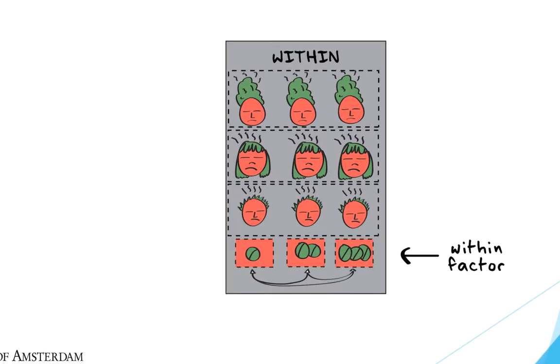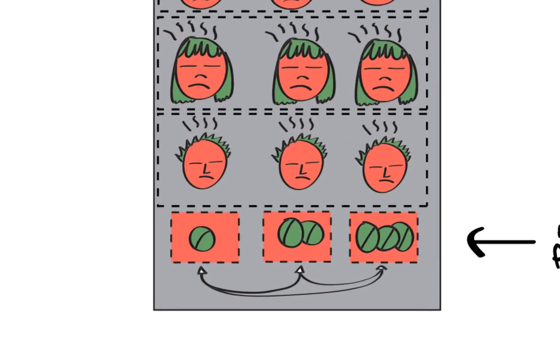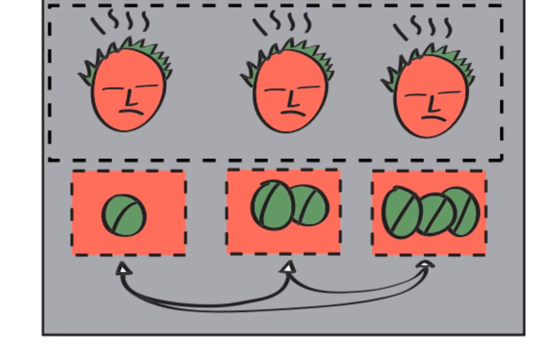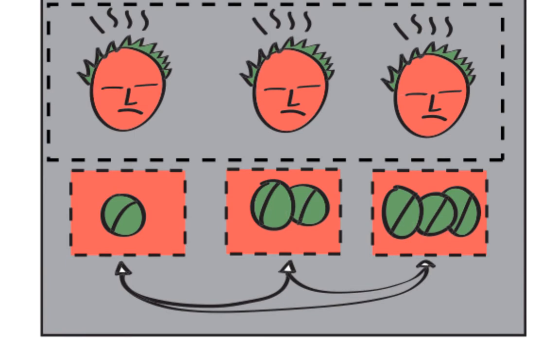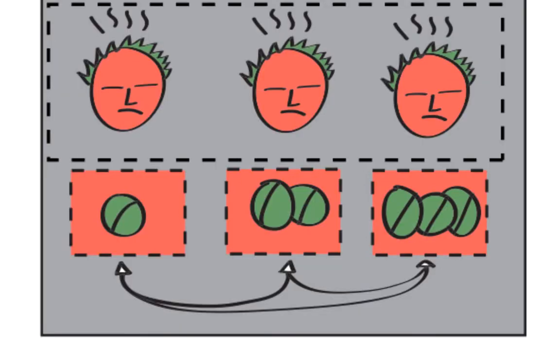The arrows show that the order of the independent variable varies randomly. So some participants start with dosage 1 and end with dosage 3, whereas others start with dosage 2 and end with dosage 1.